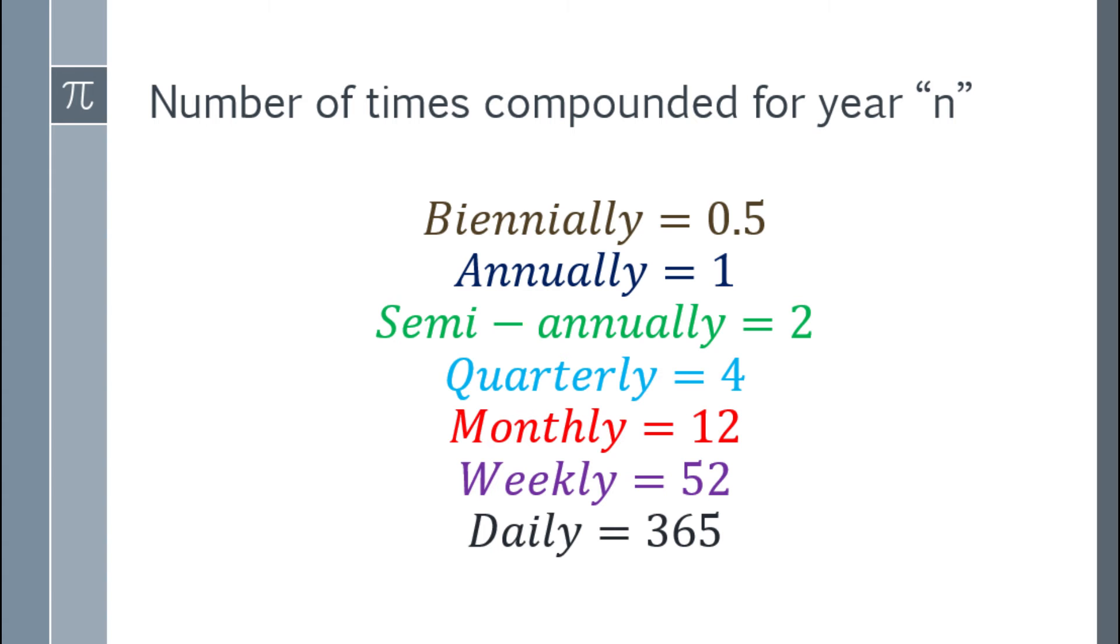Next is the number of times or the compounding frequency, the variable n. Let's start with biannually, that will be 0.5. Annually is 1. Semi-annually is 2. Quarterly is 4. Monthly is 12. Weekly is 52, and daily is 365.